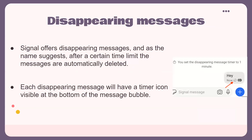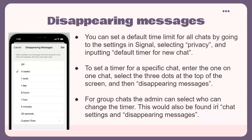Signal offers disappearing messages. After a certain time limit, the message automatically deletes. Each disappearing message will have a timer icon visible at the bottom of the message bubble, as shown in the picture. You can set a default time limit for all chats by going to Signal's settings, selecting Privacy, and inputting a default timer. For a specific chat, enter the one-on-one chat, select the three dots at the top of the screen, and then select 'Disappearing Messages.'